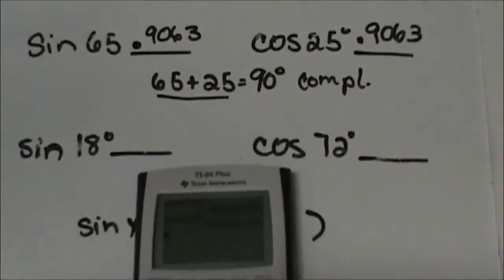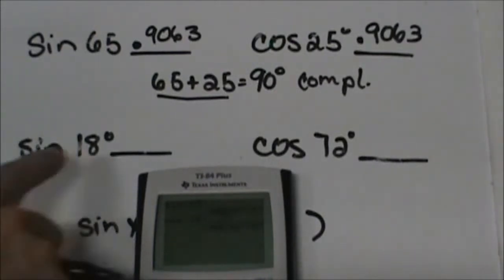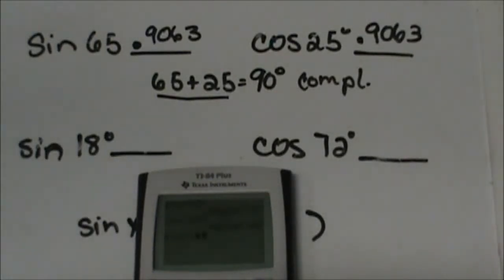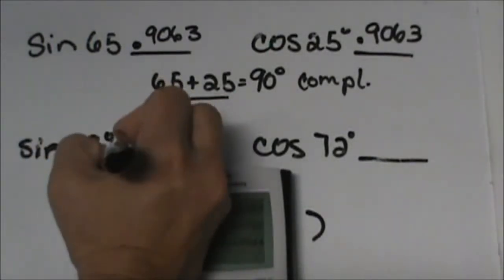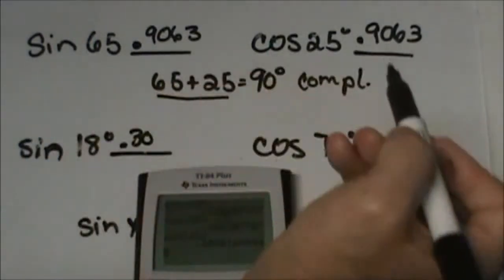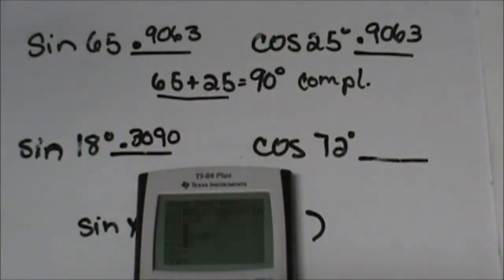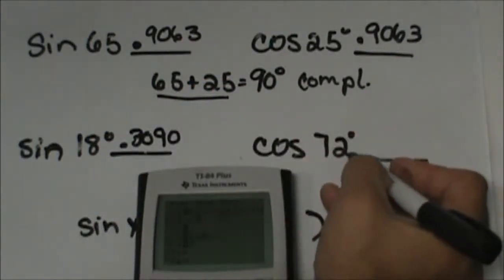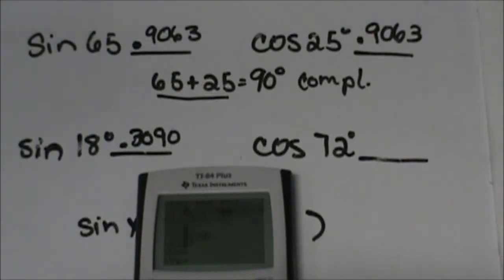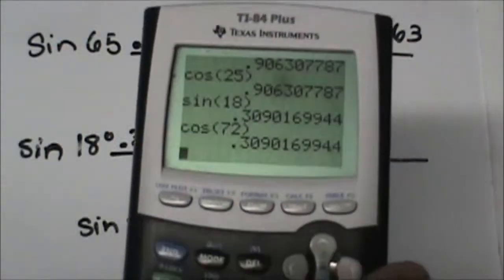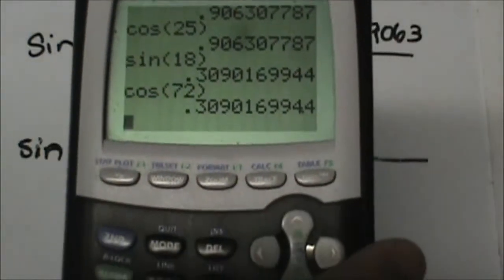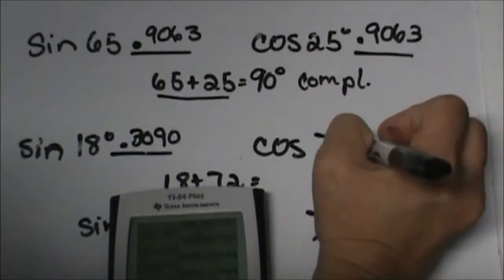So let's look at another set and see if we see the same pattern. Let's take the sine of 18, so I'm going to take the sine of 18 and I get 0.3090, and I'm going to take the cosine of 72, and again I'm getting the same value, I'm getting 0.3090.